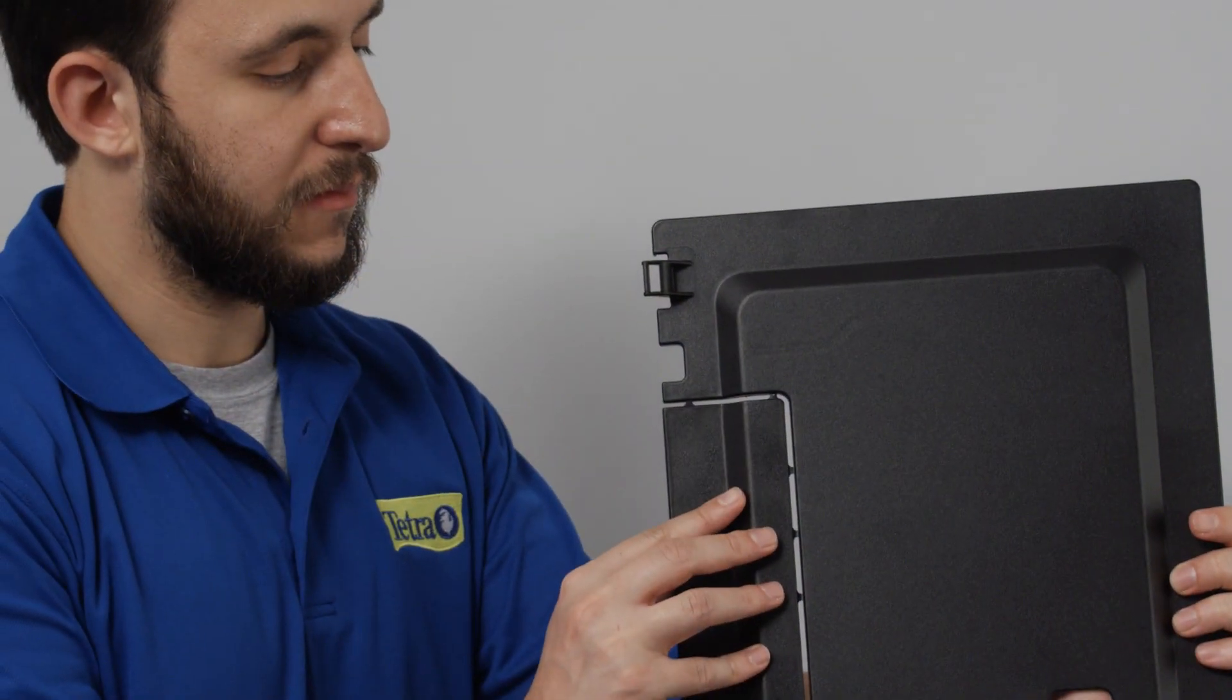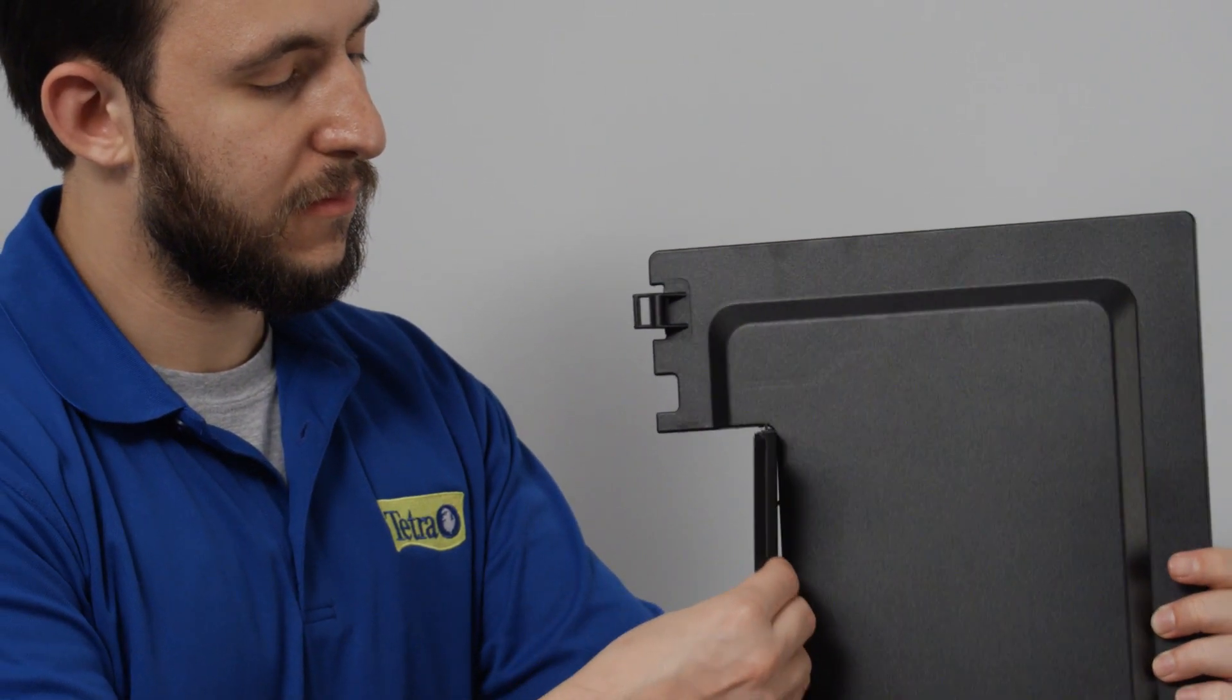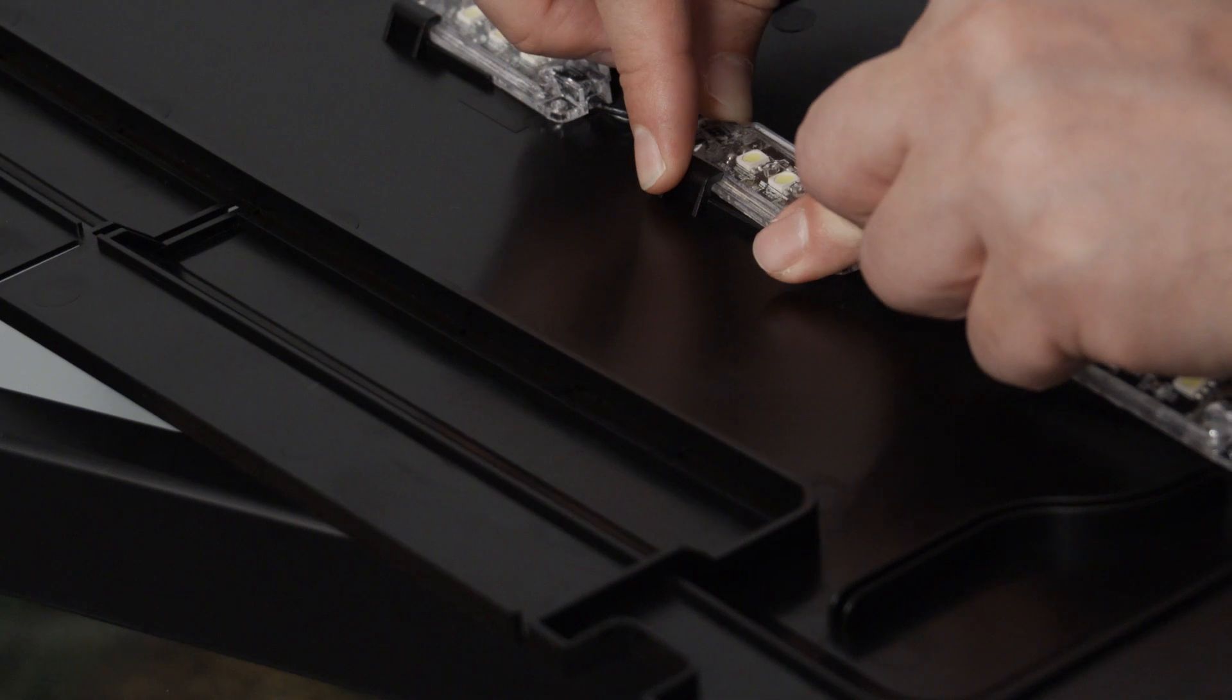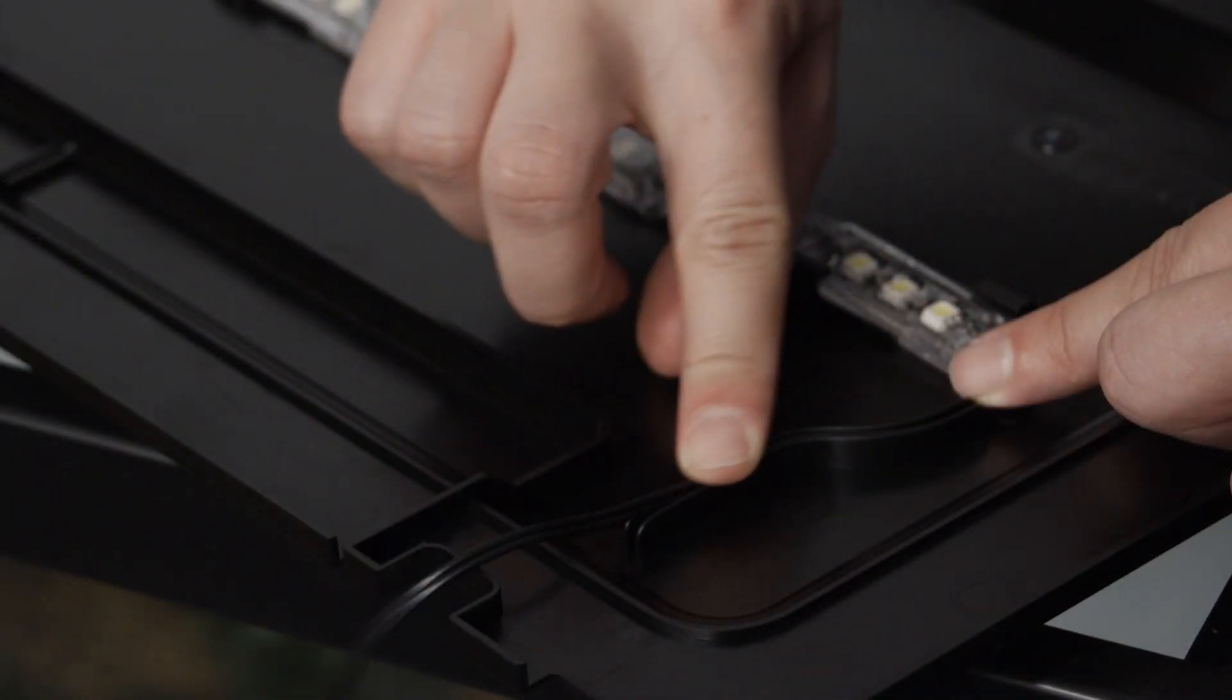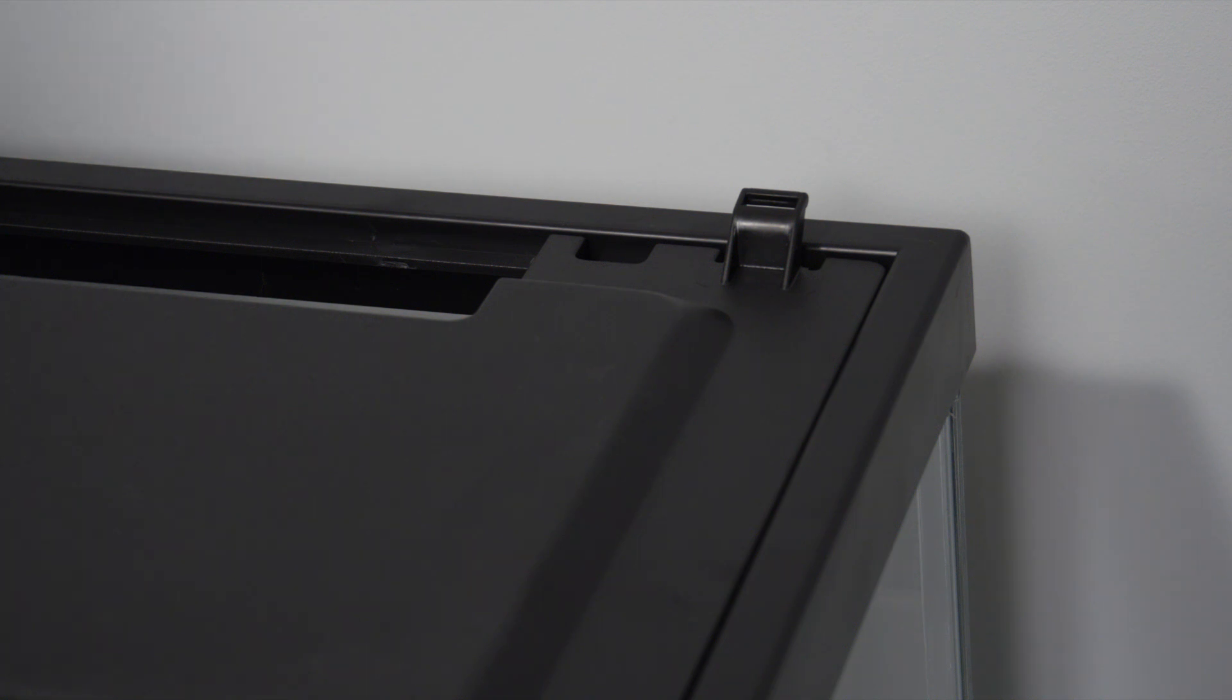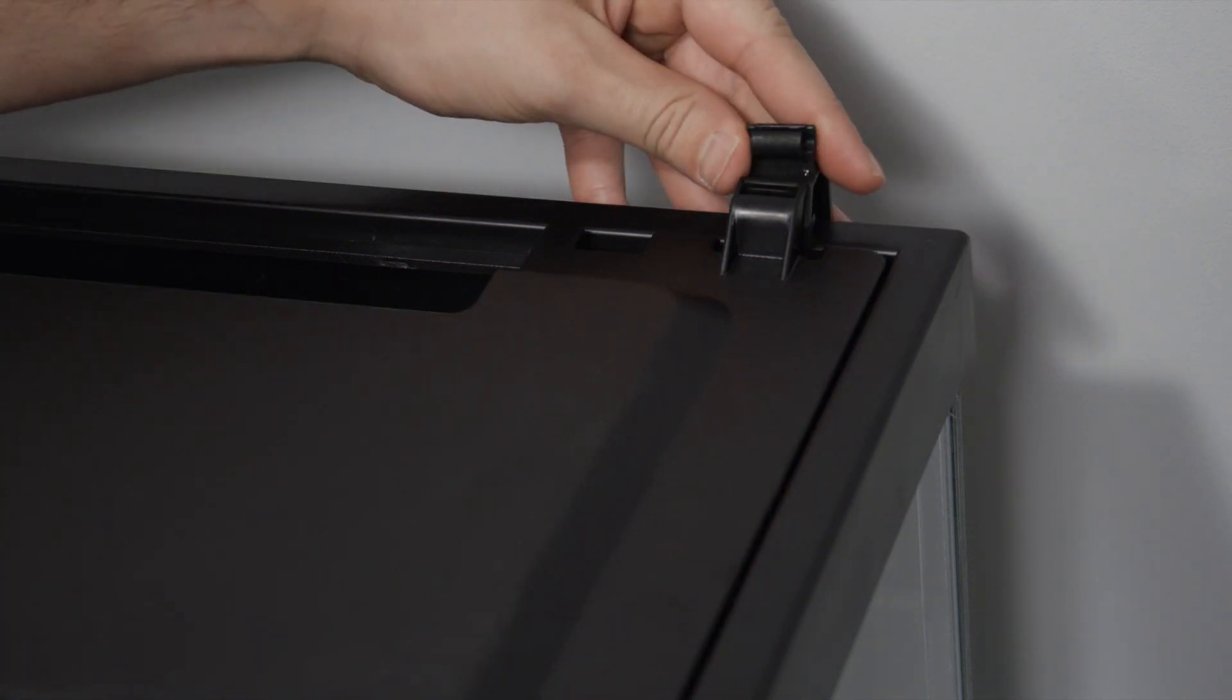First, remove any cutouts needed to fit the filter. Then, place the LED lights into the top of the hood. Slide each light into the track at an angle. Place the hood on the aquarium, align the frame clips with the hinges, and remove the hood.